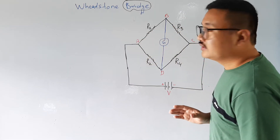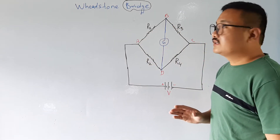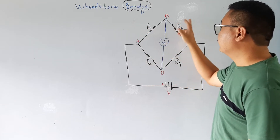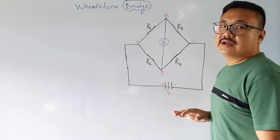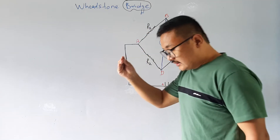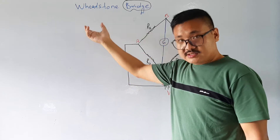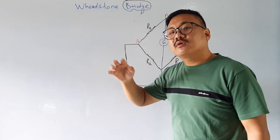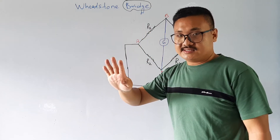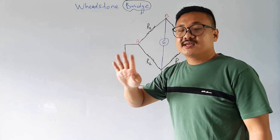For convenience, let us write them as R1, R2, R3 and R4. The Wheatstone Bridge is a network of 4 resistances connected in series and parallel.